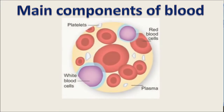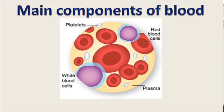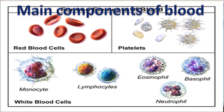Main components of blood: It contains mainly plasma and blood cells, like white blood cells, red blood cells, and platelets. Red blood cells are made up of red-colored pigments. Platelets are irregular-shaped blood cells, and white blood cells are found in different types due to changes in the structure of the nucleus and its functions.